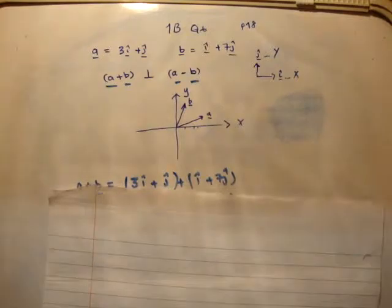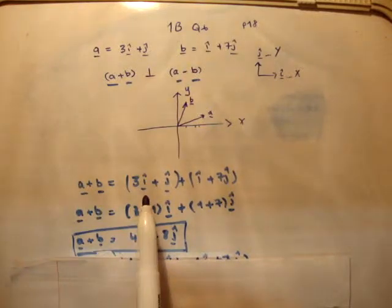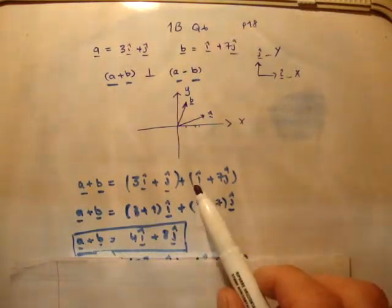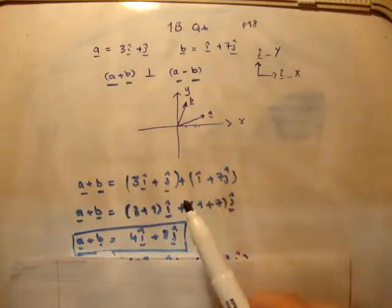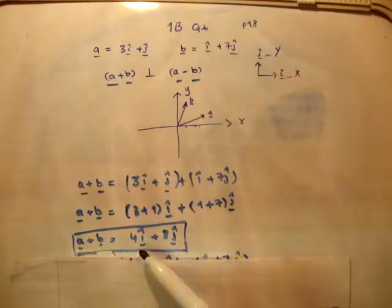Next, we need to find what vector a plus b equals. We write down a, which is 3i hat plus j hat, plus i hat plus 7j hat. You can add, subtract, multiply, and divide anything provided they're in the same dimension or direction. We have 3i hat and i hat here, and j hat components. I'll rearrange this equation so that I have all the i hats together and all the j hats together. Finally, a plus b equals 4i hat plus 8j hat.